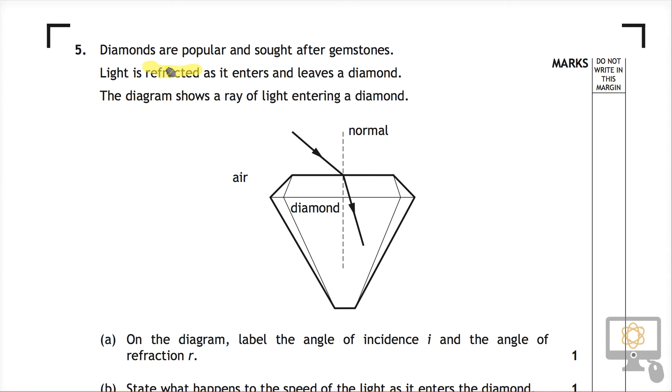The diagram shows a ray of light entering the diamond, and so what we've got here is that the ray travels in here, hits this point here. We're showing the dashed line of the normal, and it bends toward the normal as it enters the diamond.